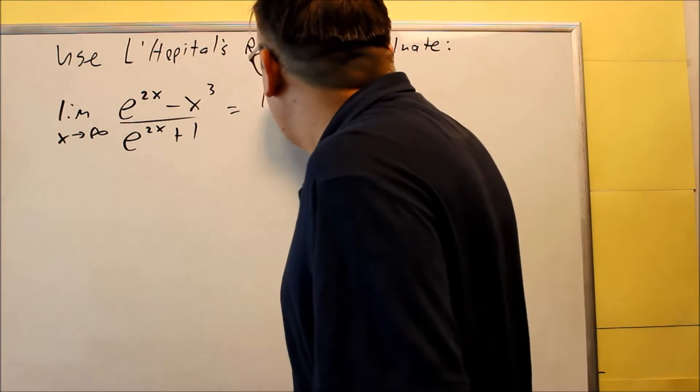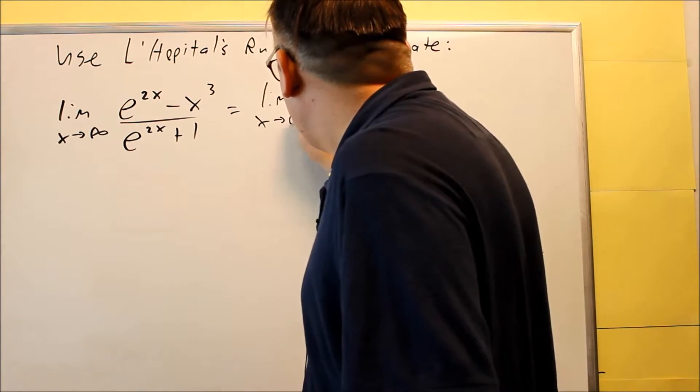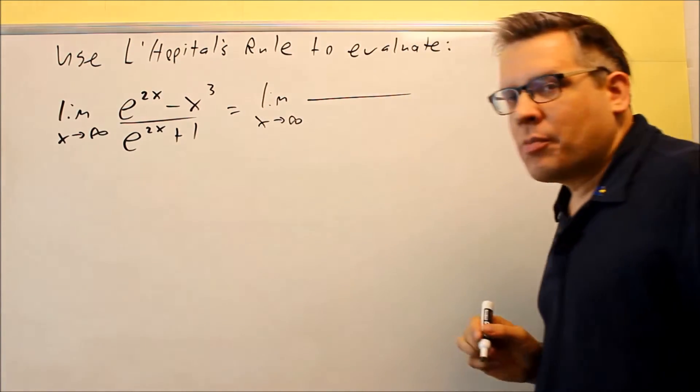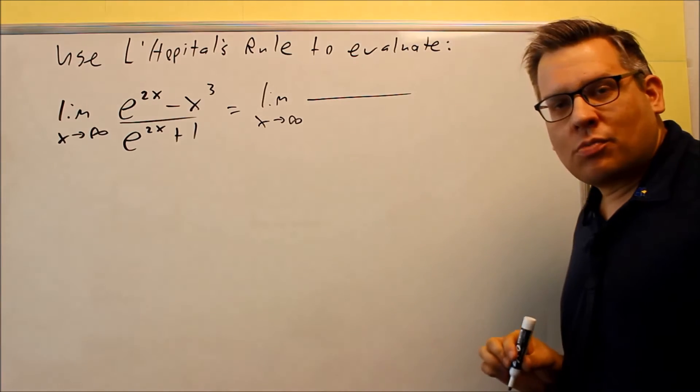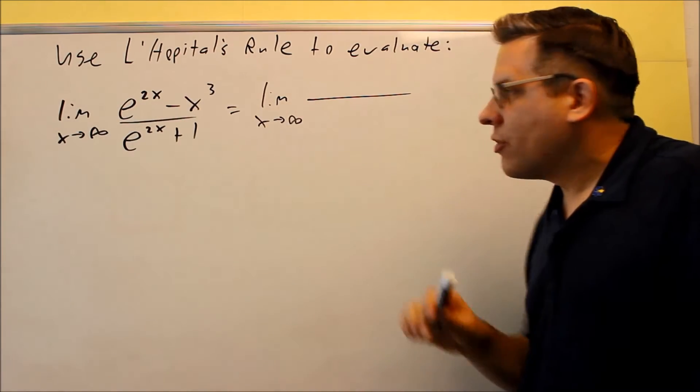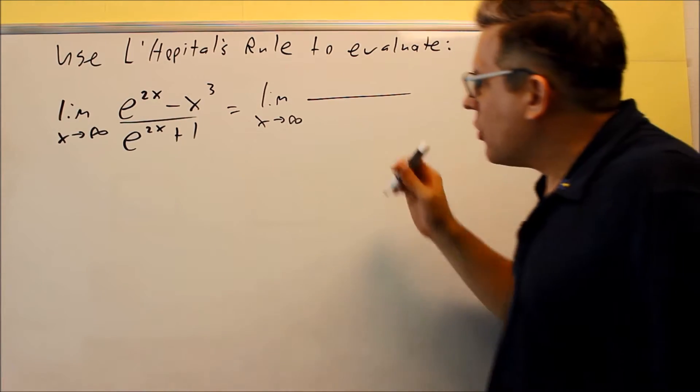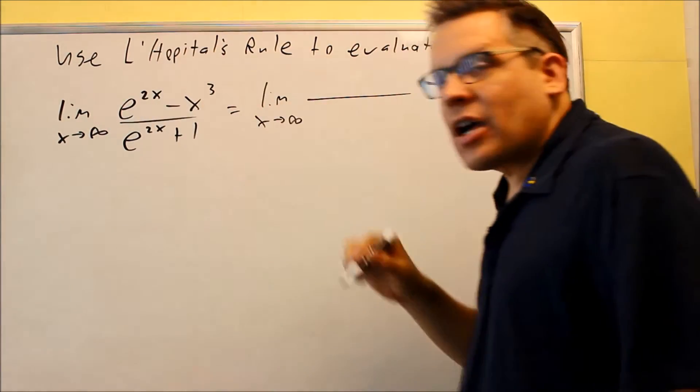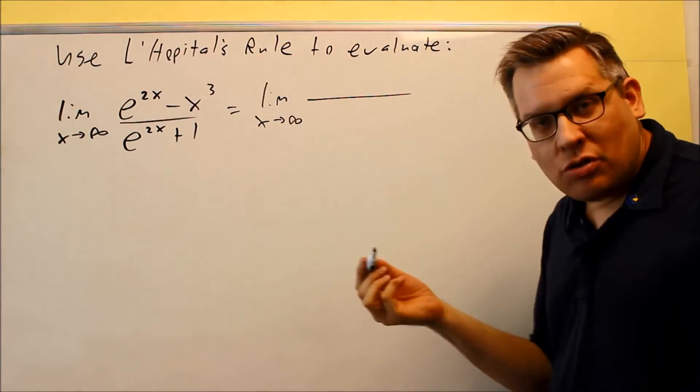So we're going to take the derivative of top and bottom separately. We're going to apply the chain rule, apply that special formula for e to the u here. So the derivative is e to the 2x times the derivative of the top, which is going to be 2.